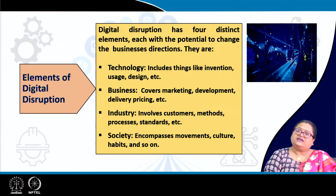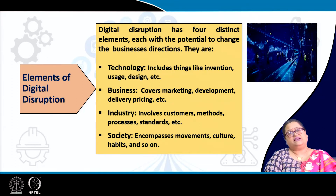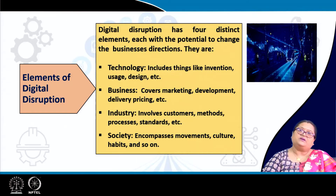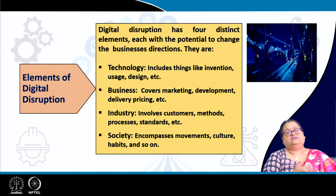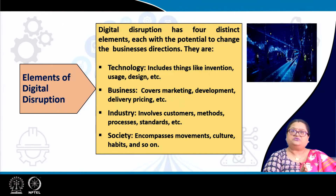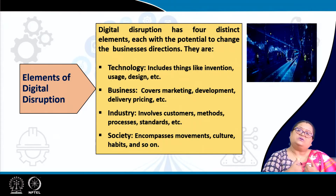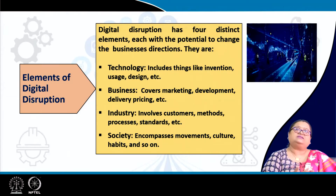The four elements are: first, technology, which includes things like invention, usage, and design; second, the business itself, which covers marketing, development, delivery, and pricing; third, industry, which involves customers, methods, processes, and standards; and fourth, society at large, which encompasses movements, culture, habits and so on. Technology first affects the business, the business is placed within the ecosystem of the industry, and how the industry is changing will generally affect society. Society will also give its feedback to the industry, industry to business, and to technology — showing how digital disruption works inward and outward.